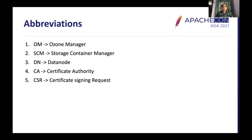These are the abbreviations used throughout the presentation. OM stands for Ozone Manager. SCM stands for Storage Container Manager. DN stands for Data Node. CA stands for Certificate Authority. CSR stands for Certificate Signing Request.